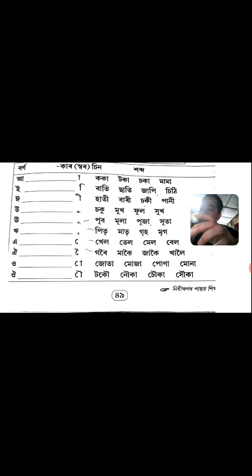And the Harsho matra — Chaku, Moh, Hol, Ho. In this way, other vowel matras are also there. Dirghai matra: poop, mula, puja, hoota.